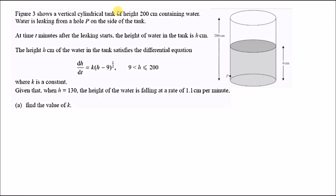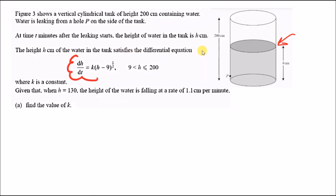Figure 3 shows a vertical cylindrical tank of height 200 centimeters containing water. Water is leaking from a hole P on the side of the tank. This looks like a differential equation — at time t minutes after the leaking starts, the height of the water in the tank is h centimeters. The height h satisfies the given differential equation.